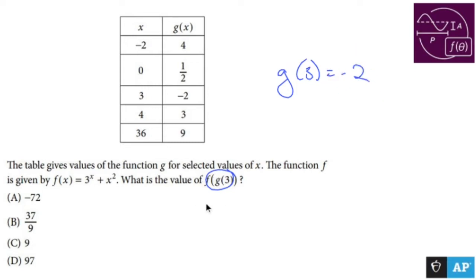So now what this wants us to do is just find f of negative 2. f of x is 3 to the x, so 3 to the negative 2 plus negative 2 squared.